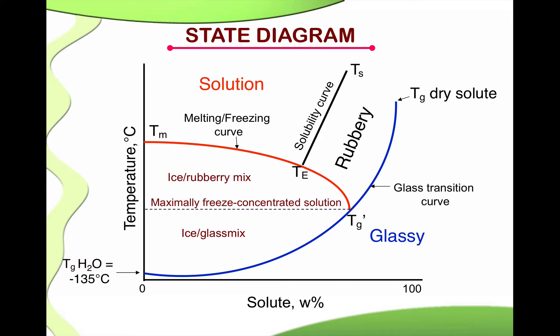In the previous presentation, I have explained about the state diagram, the different features of state diagram, which is basically the overlay of the equilibrium curve as well as a non-equilibrium curve, and the transition as a function of temperature and the solute concentration, which involves the phase transition as well as state transition.